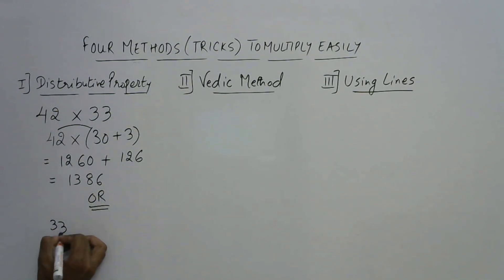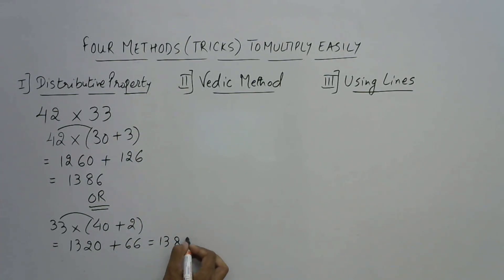Or you can do it otherwise just like I told you in the previous example. See 33 can be retained as it is and 42 can be broken down into 40 plus 2. Now again you multiply this 4 times 3 are 12, 2 and 1 carry. So 13 and put a 0 then 66. So here you have the same answer 1386. This is the distributive property.